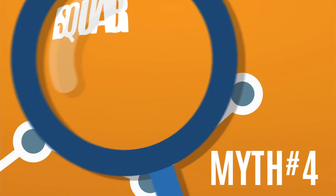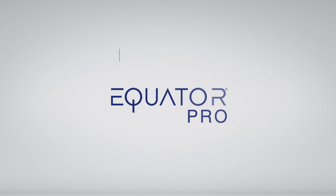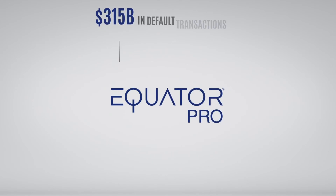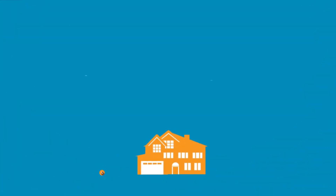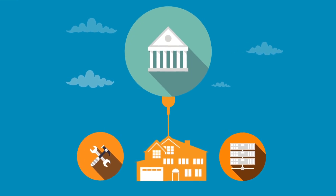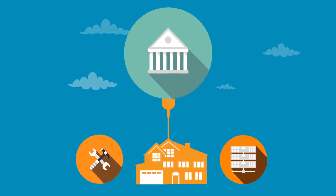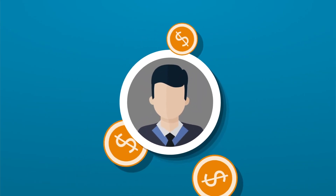Myth number four: Equator is just for the big banks. Fact: with $315 billion in default transactions processed since inception — $15.8 billion alone in 2016 by over 20,000 agents — it's no surprise that Equator is viewed this way. Now with Equator Pro, servicers and asset holders of all sizes can tap into the same powerful system used by the nation's largest banks, on their budget. Are you ready to be treated like a big bank?